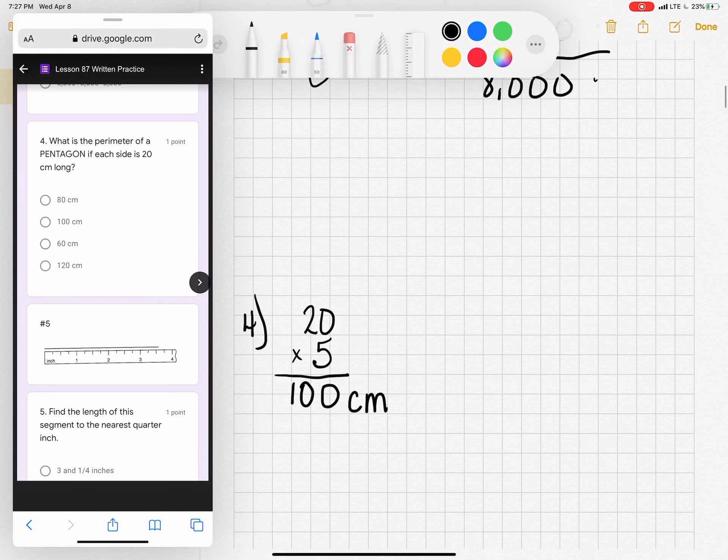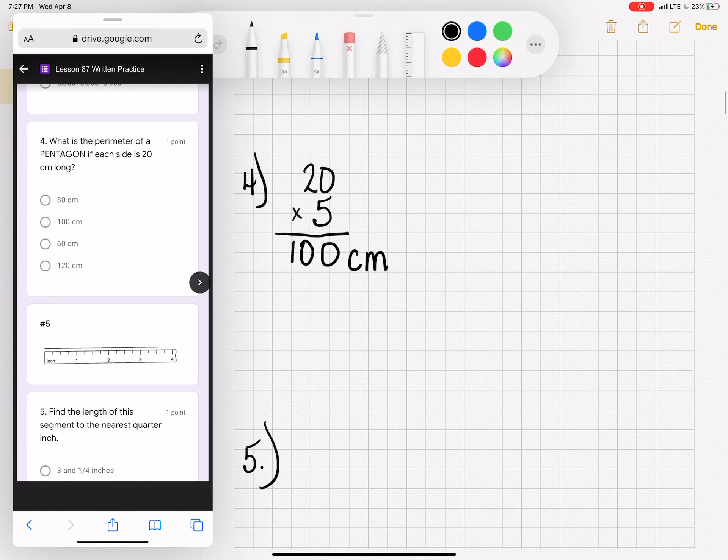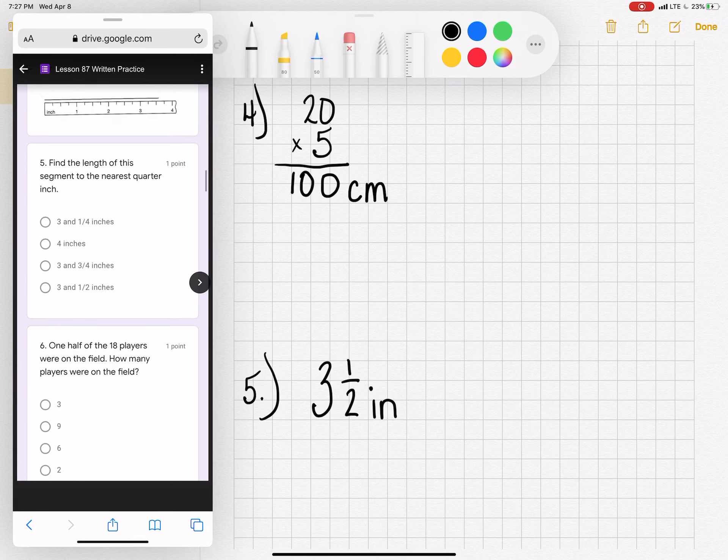Number 5 is pretty hard to read. I apologize for that. But this line segment is right in the middle between 3 and 4 inches. So we know that means we have 3 whole inches and 1 half of the next. 3 and 1 half inches.